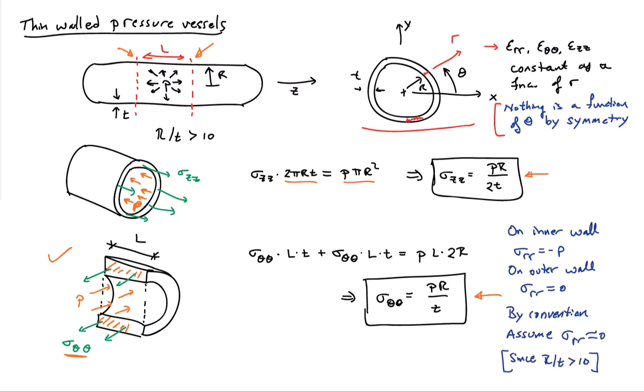And so the conventional assumption is to assume that the radial stress is equal to zero. And that's really based on this issue of the thinness assumption for the pressure vessel.